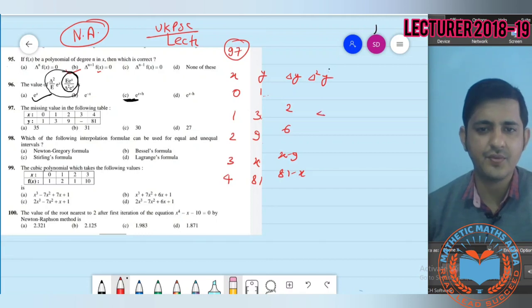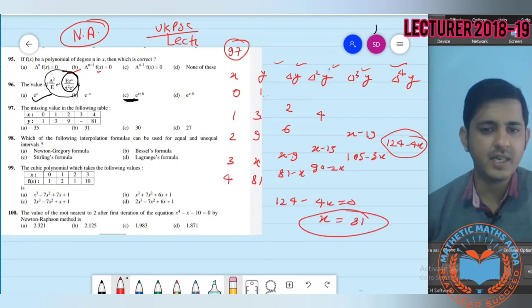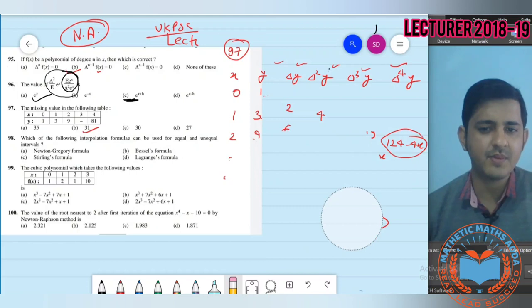Del squared y is 4, x minus 15, 90 minus 2x. Del cube y is x minus 19, 105 minus 3x. Fourth difference is 124 minus 4x. For equal intervals with missing frequency, calculate forward differences until the last value. Set the last value equal to zero. So 124 divided by 4 equals 31. The missing frequency x is 31, so option B is the answer.